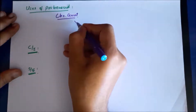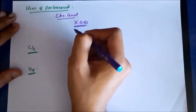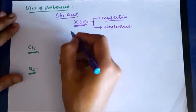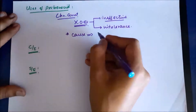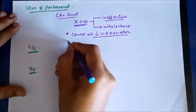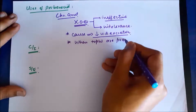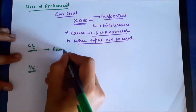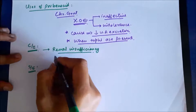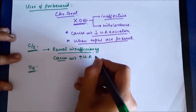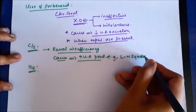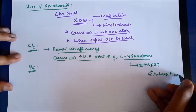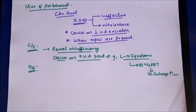Probenecid is mainly used in chronic gout when xanthine oxidase inhibitors are either ineffective or when there is intolerance to those drugs. It can also be used when the cause of chronic gout is decreased excretion of uric acid rather than increased production, and it is indicated when TOFI are present. Probenecid is contraindicated in renal insufficiency or renal failure, and when the cause of hyperuricemia is increased production of uric acid — for example, in Lesch-Nyhan syndrome.